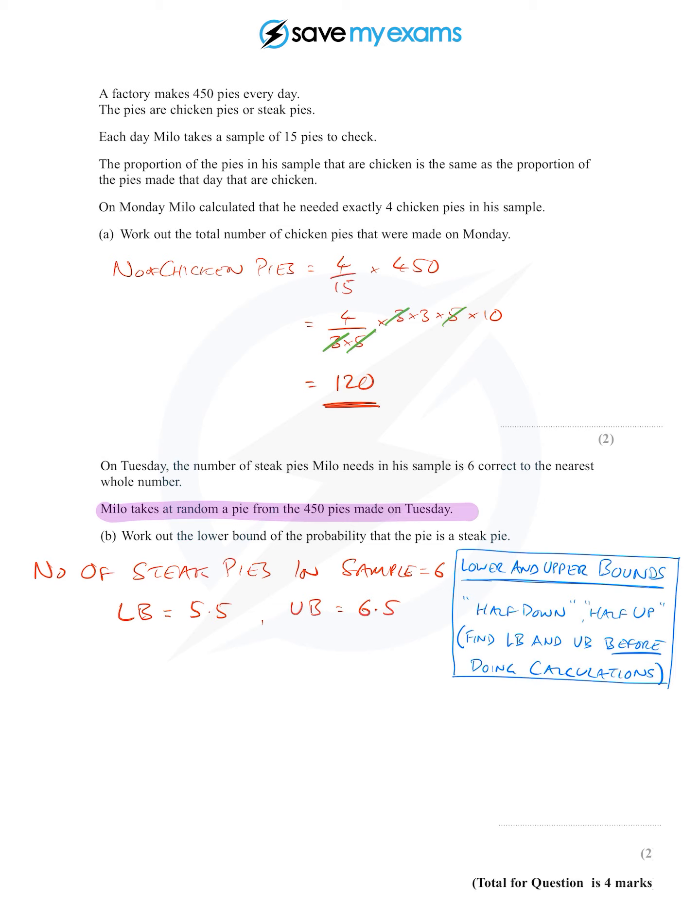The lower bound of the probability of getting a steak pie is the lower bound for the proportion of steak pies, that's 5.5 over 15, which is the probability. But we need to simplify that.